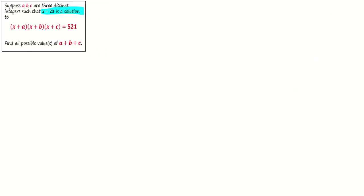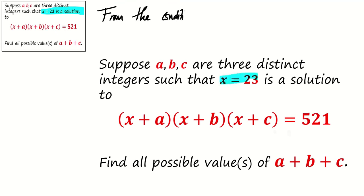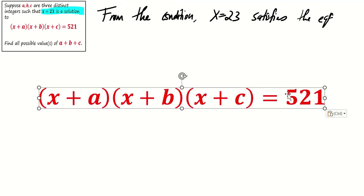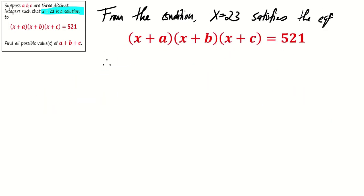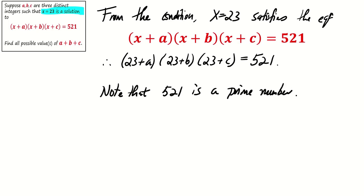Let's delve into our problem. From the condition, x = 23 satisfies the equation (x + A)(x + B)(x + C) = 521. This means that (23 + A)(23 + B)(23 + C) = 521.